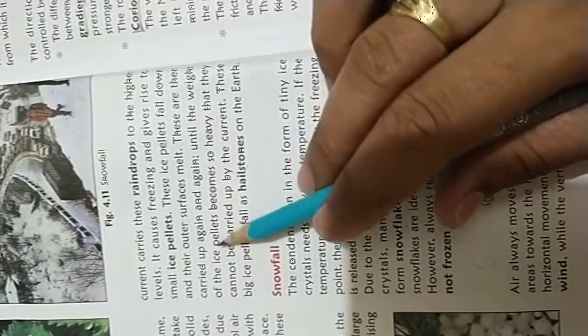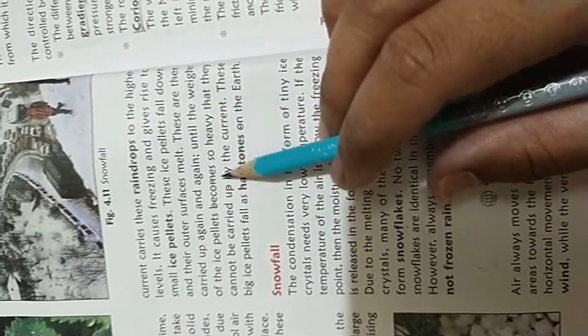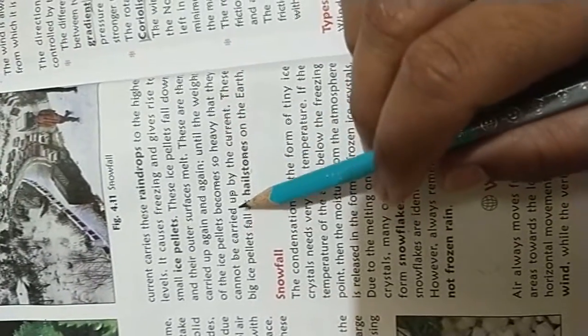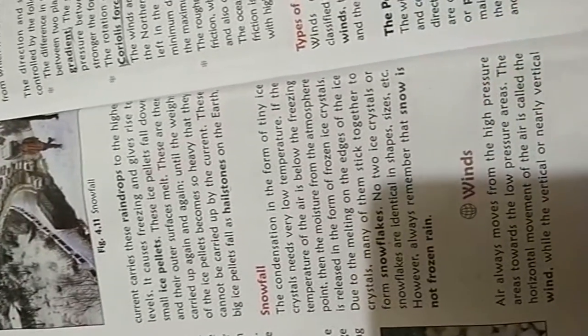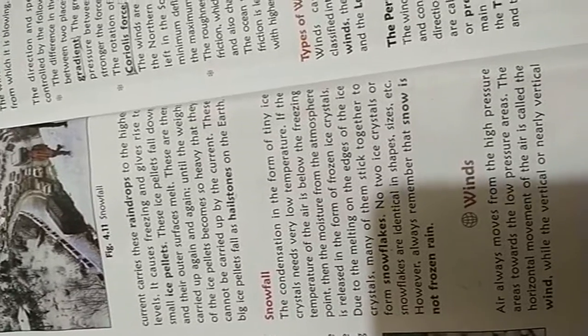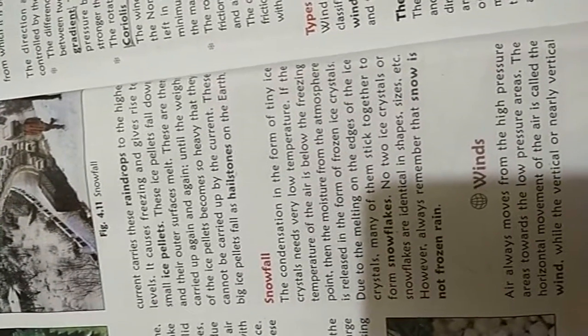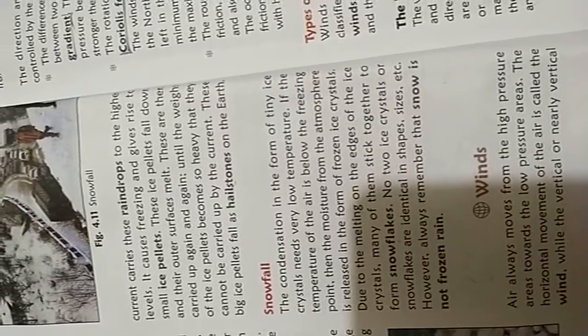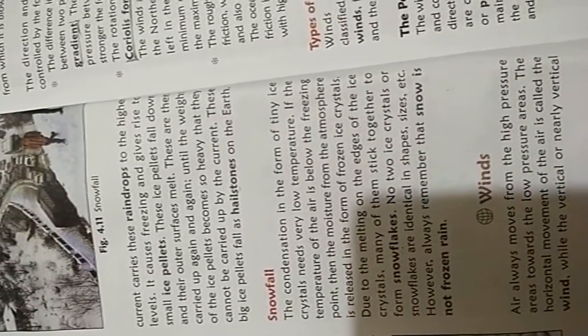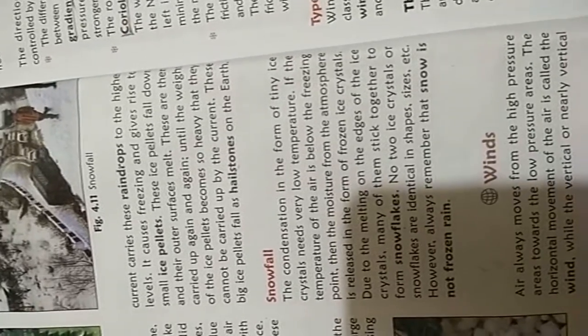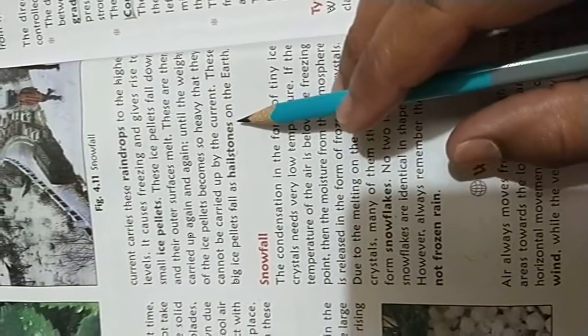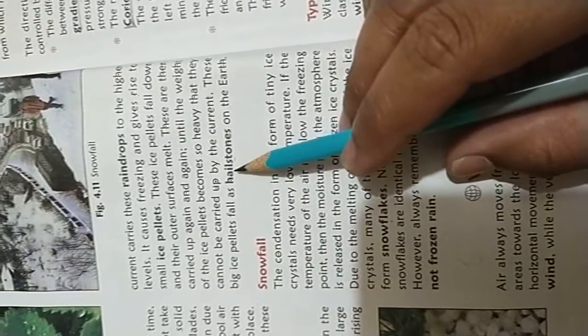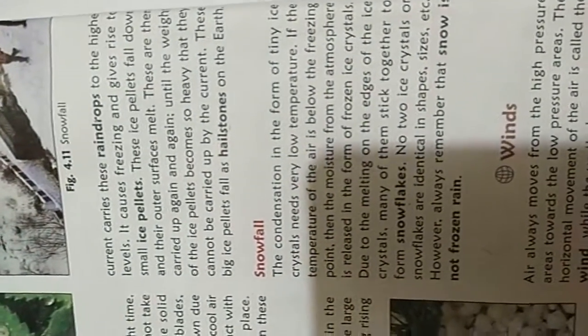These are carried up again and again until the weight of the ice pellets becomes so heavy that they cannot be carried up by the currents. So these big ice pellets fall as hailstones on the earth, and we call them hailstones.